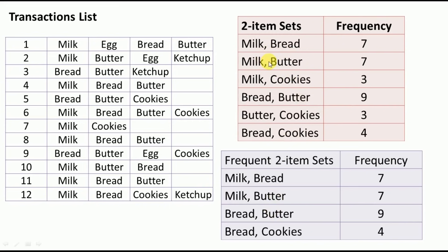For each two-itemset, we count how many times both items appear together across the 12 transactions. For example, milk and bread appear together in transactions 1, 4, 6, and others. Counting them gives a frequency of 7.